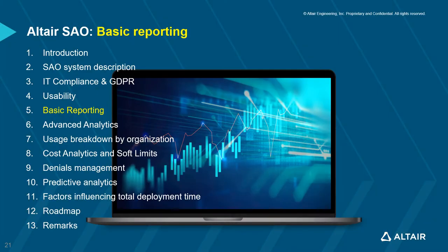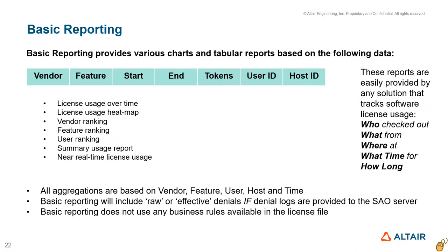Just about any system dealing with license tracking provides a set of basic reports such as usage over time, aggregations over vendor, feature, user, summary usage reports, and real-time license usage reports. Basic reports use the fundamental data record showing who checked out what software, from which host, at what time, and for how long.